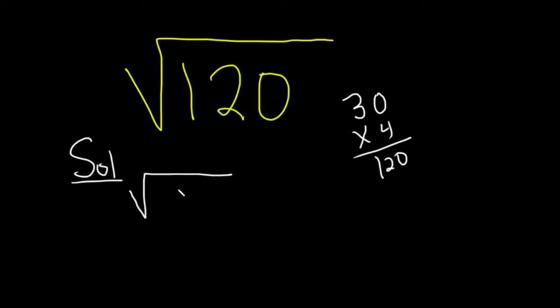So we have the square root of 120 and that's equal to the square root of 4 times 30.